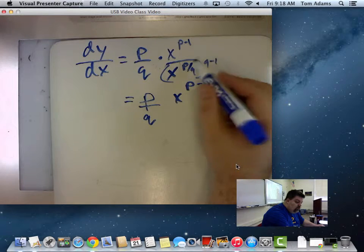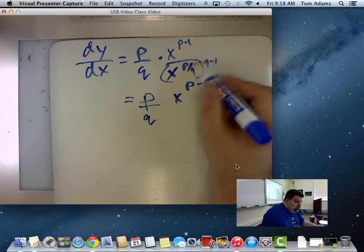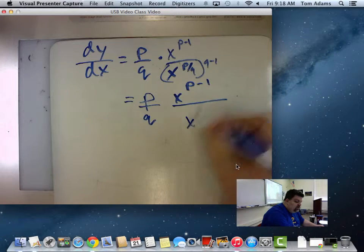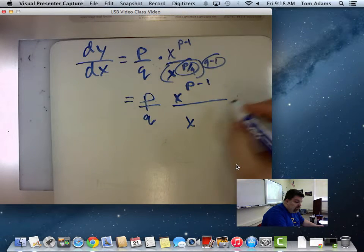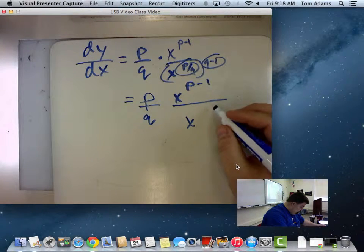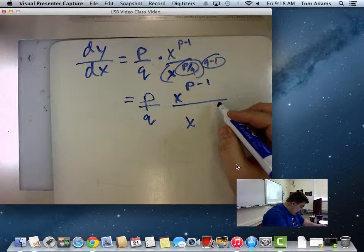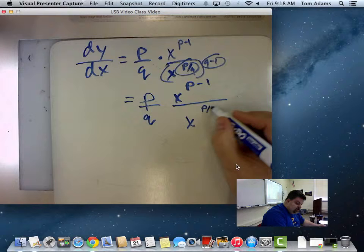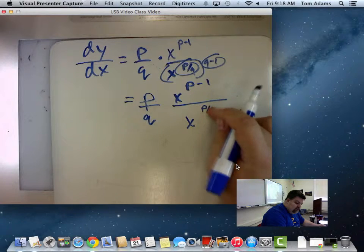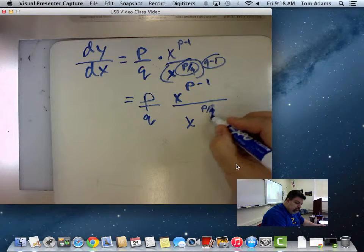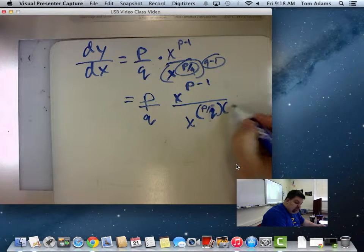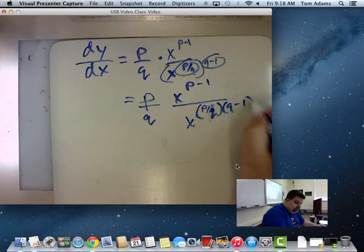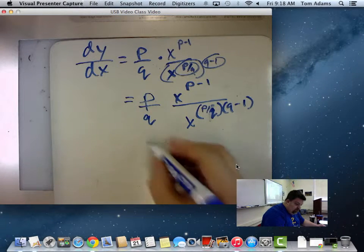This is P to the negative 1. Now, when I raise the power to this, what do I normally do? I normally multiply this times this, don't I? Yes. So when I do that, I got P over Q times Q minus 1.